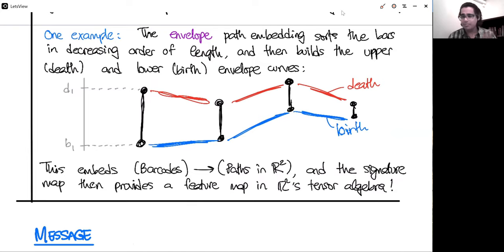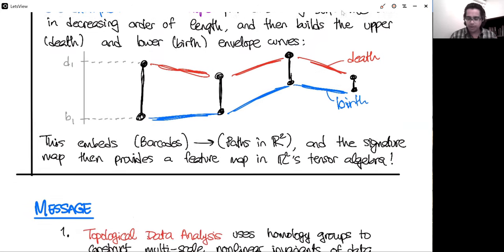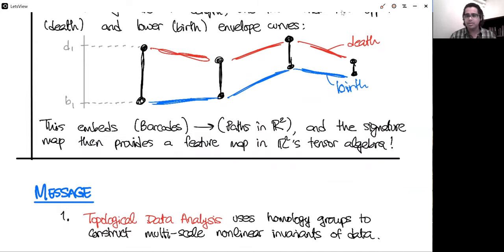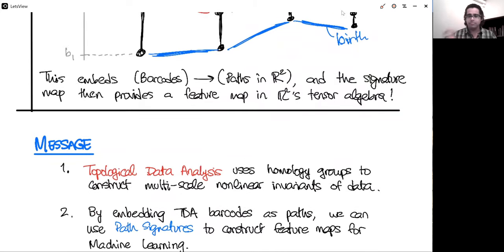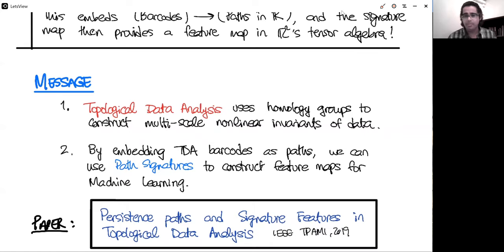And so I just want to end, I don't know how much time is left, but I want to end with just a very brief message about this entire body of work. The first takeaway is that topological data analysis uses these homology groups to construct multi-scale nonlinear invariants, topological invariants of data sets. Once you have those, the trouble is they're living in this nonlinear space. But fortunately, you can embed them as paths, because they're nice barcodes, these are combinatorial finite objects, you can embed them in some piecewise linear path space, and then use signatures to construct their feature maps. And these have wonderful performance. I am obviously not going to be able to get into the details here. If you would like to see them, they're in this paper, Persistence Paths and Signature Features in Topological Data Analysis, in the IEEE Transactions on Pattern Analysis and Machine Intelligence from last year, late last year. So check it out. If you don't have an IEEE subscription, it is on my website, which you can find using a simple Google search.